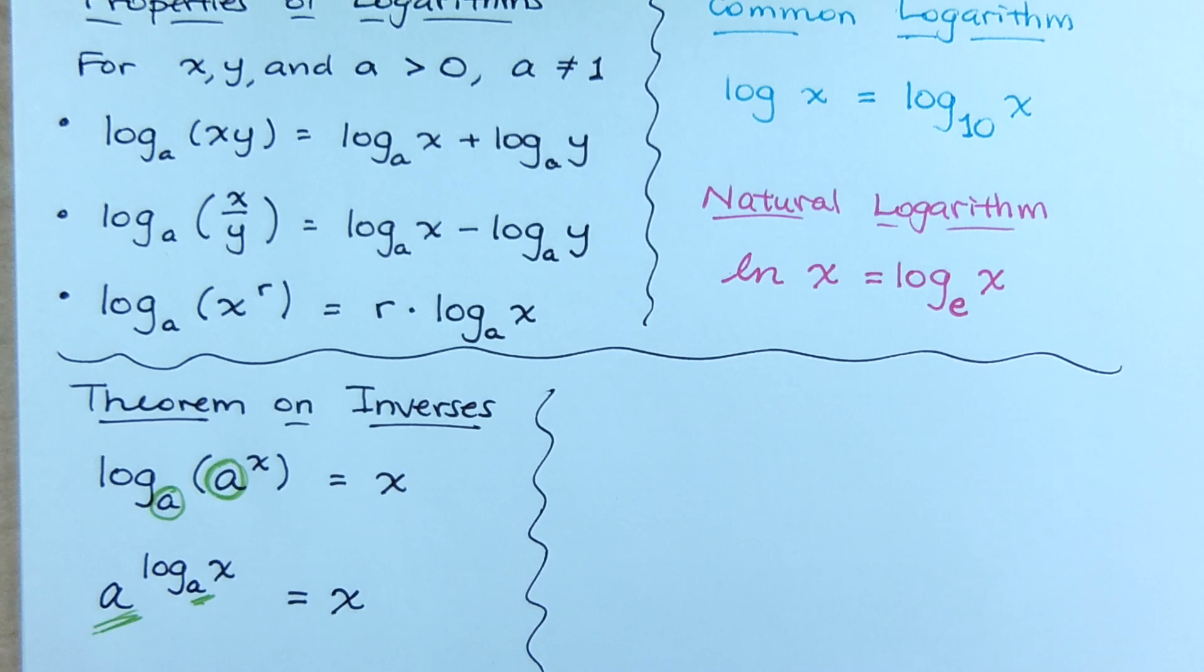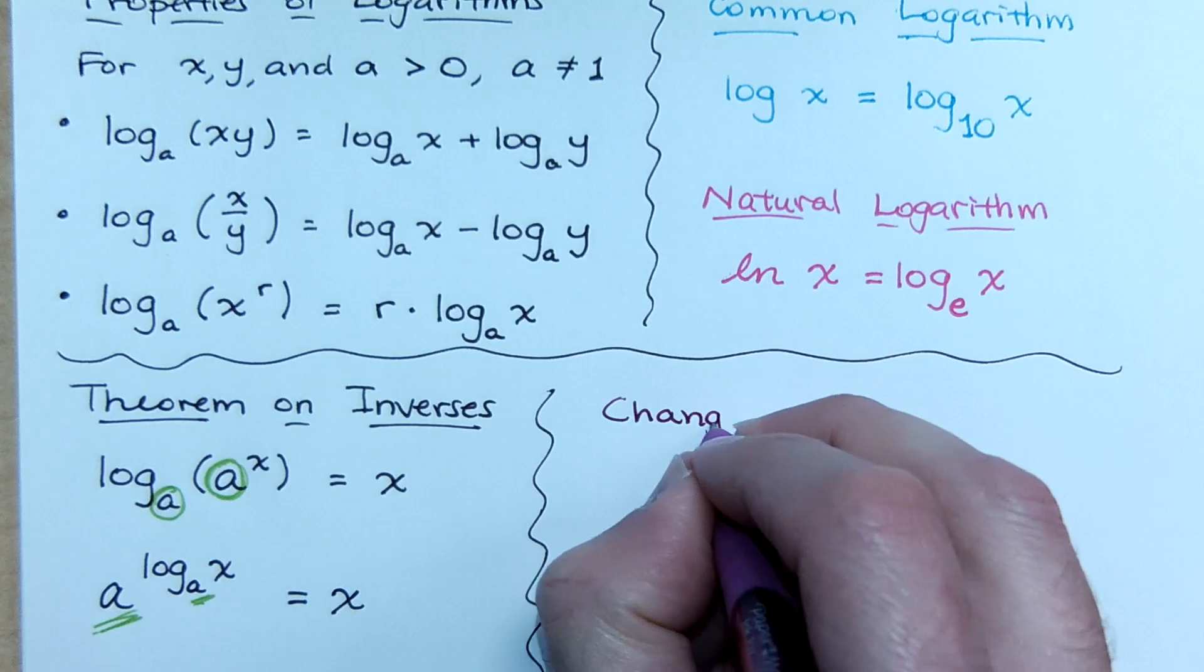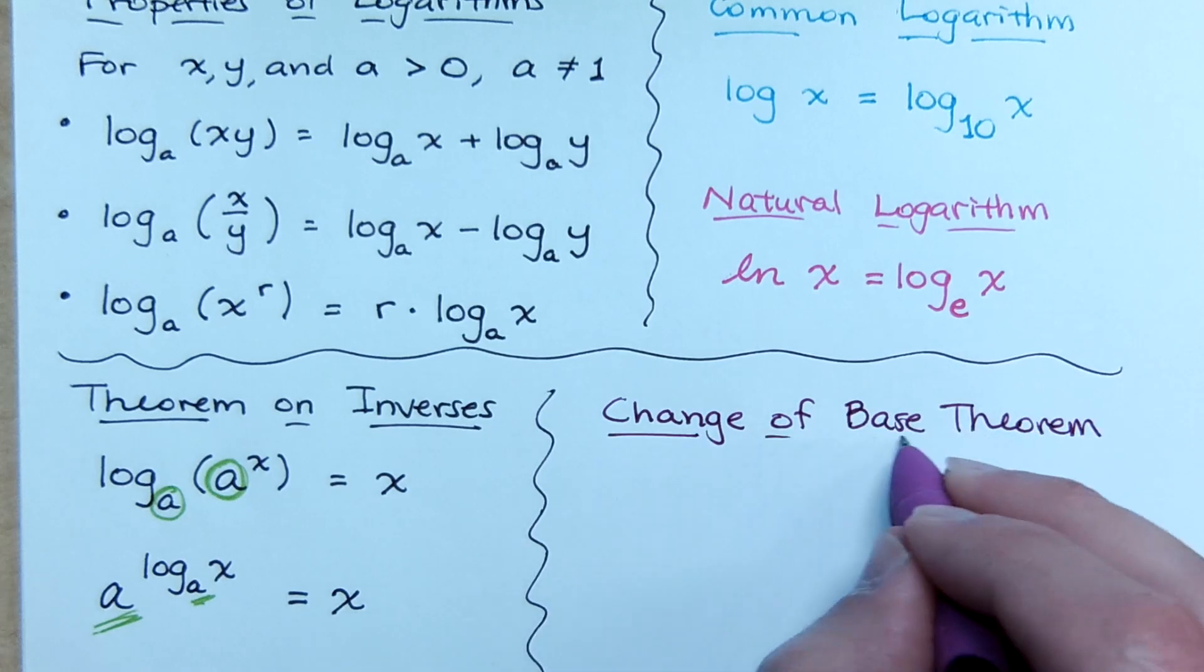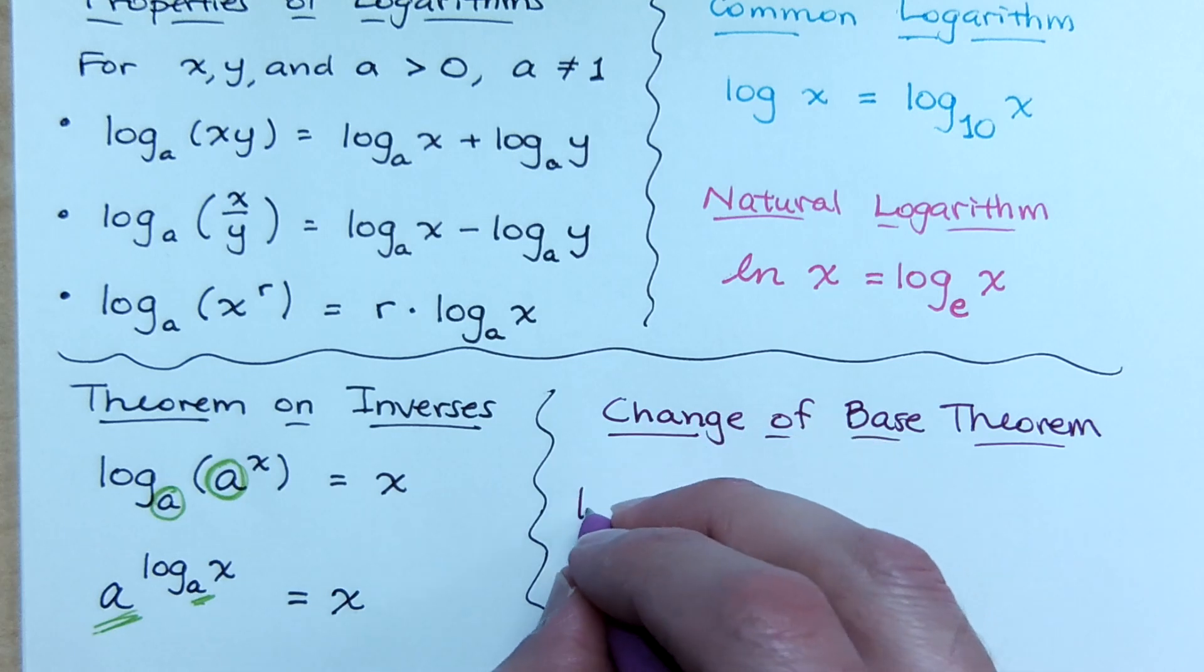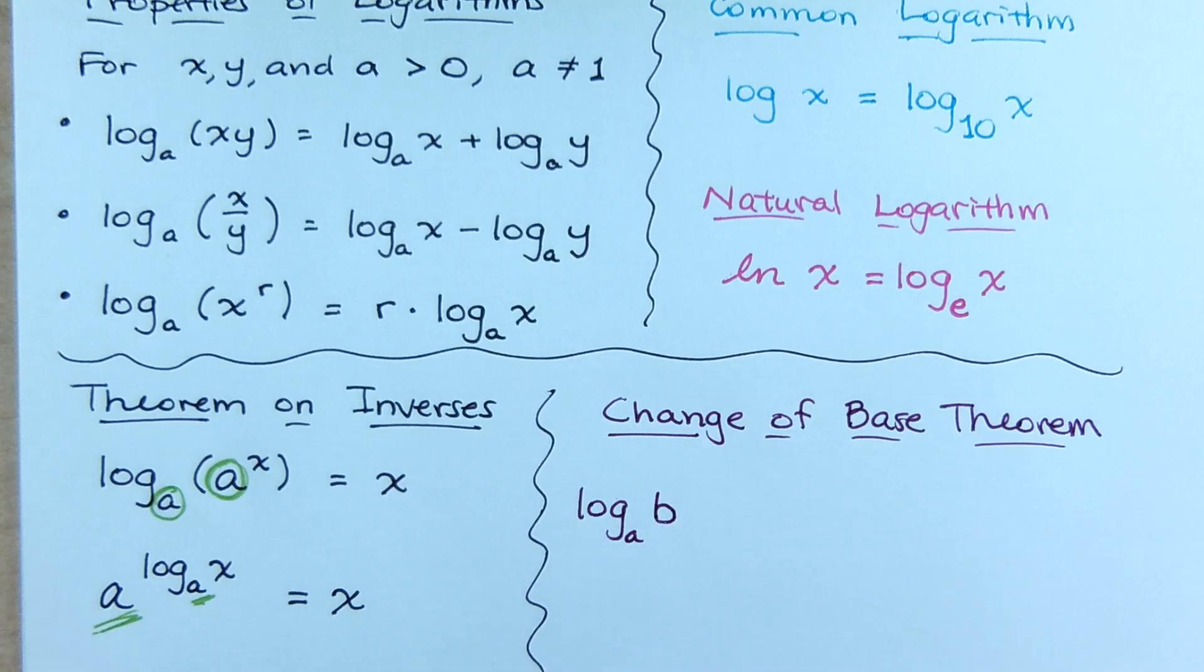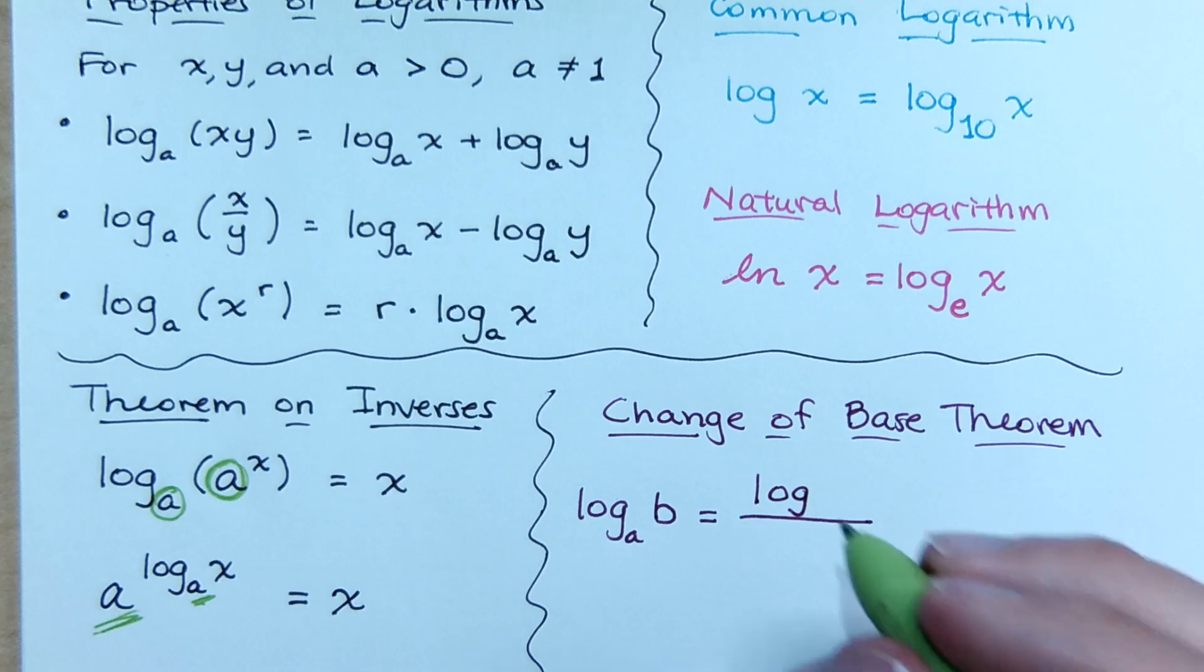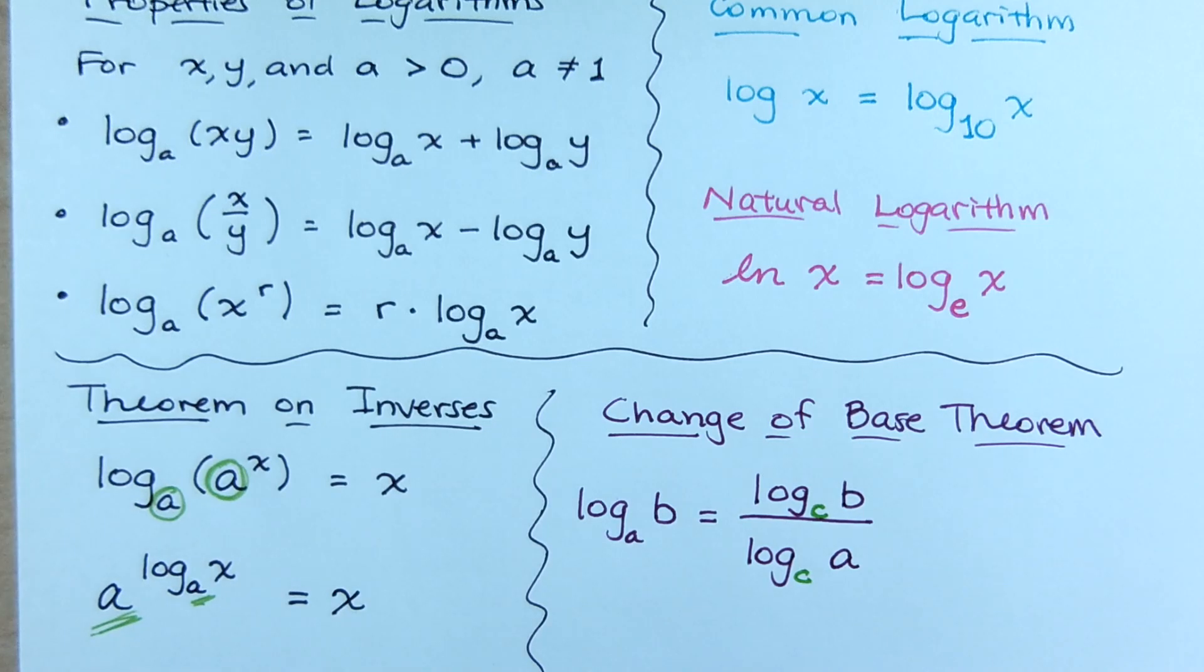And then here's this next guy. Again, I really, really, really like this guy. So much I'm going to change my color. You probably won't be able to tell, though. This is the change of base theorem. The change of base theorem says that if you have log base a of b, you can rewrite this as a fraction. And you can say log, you can pick a different letter, excuse me, a different base. Say log base c of b over log base c of a. You can change the base of the logarithm that you're working in to suit your own needs. And I'm going to show you how useful that is and how we could have used that on a previous problem.